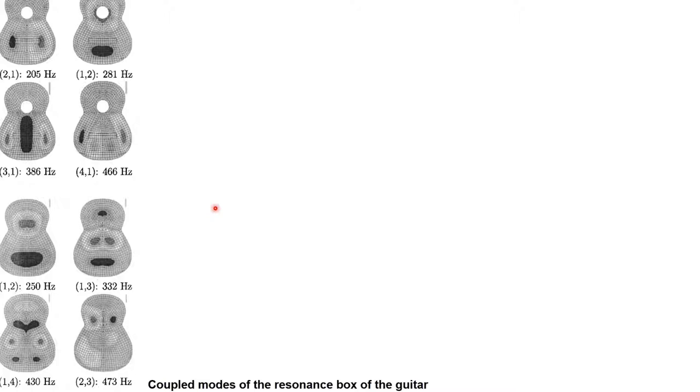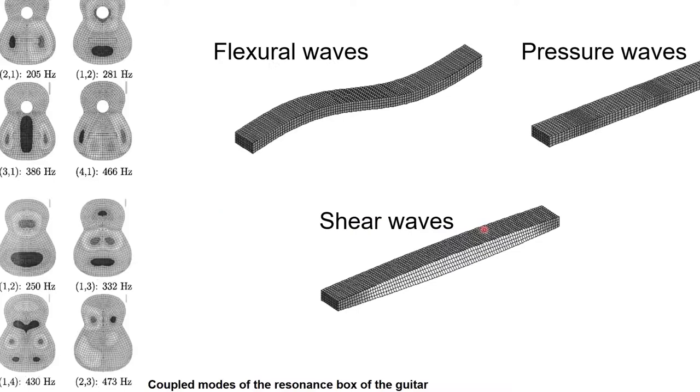I show you here some resonator modes of a resonance box of a guitar. They depend on the geometry and material of the instrument, and at different frequencies you have different mode shapes. They are basically standing waves of a resonance box.